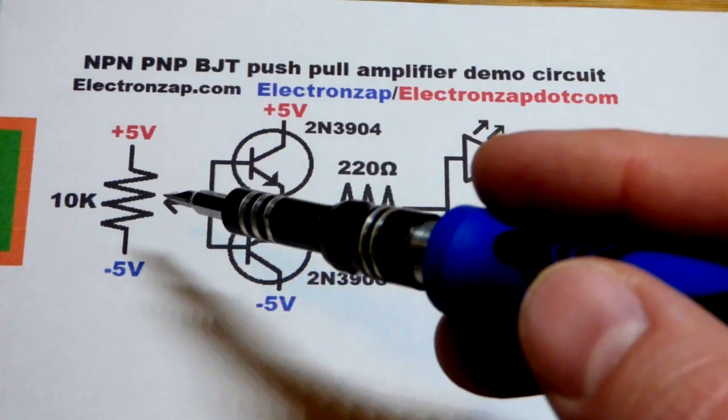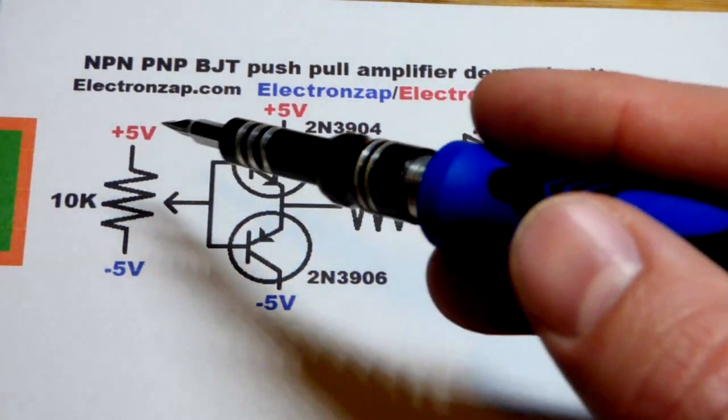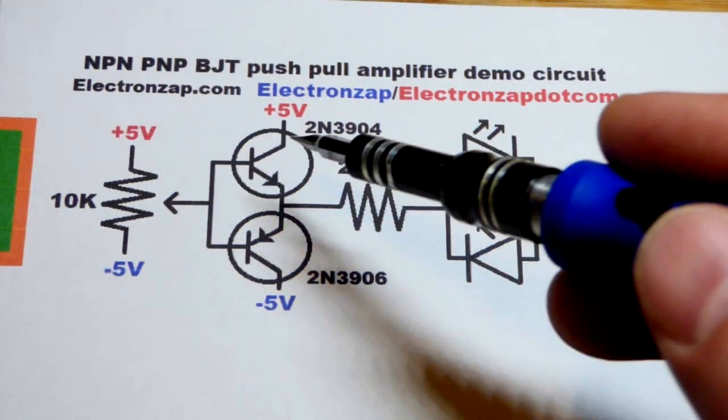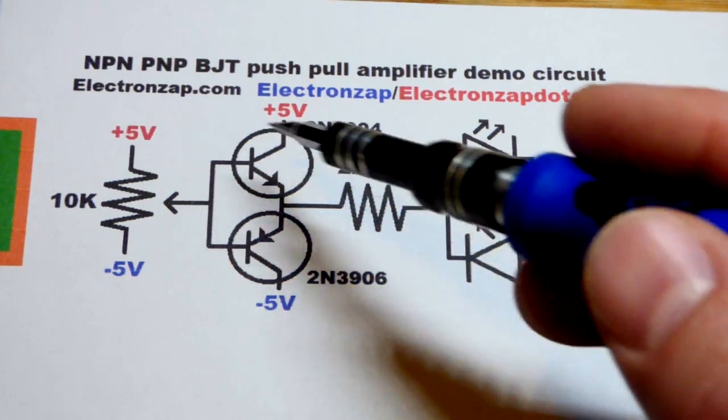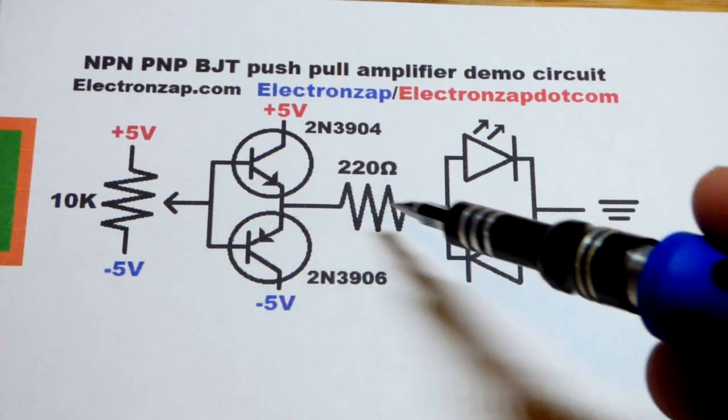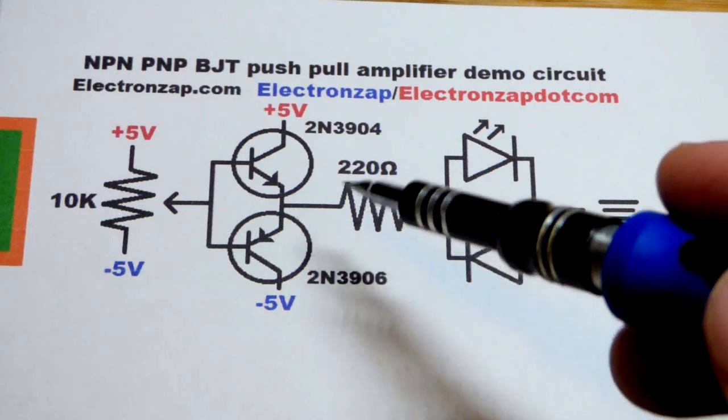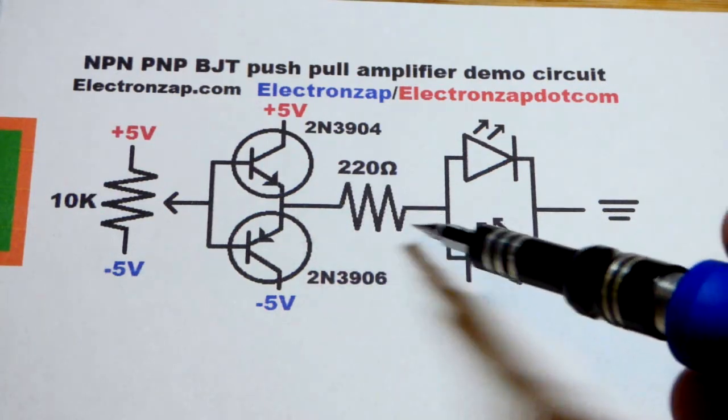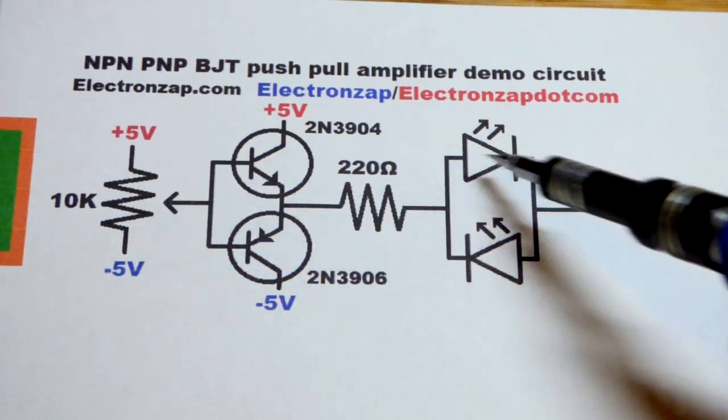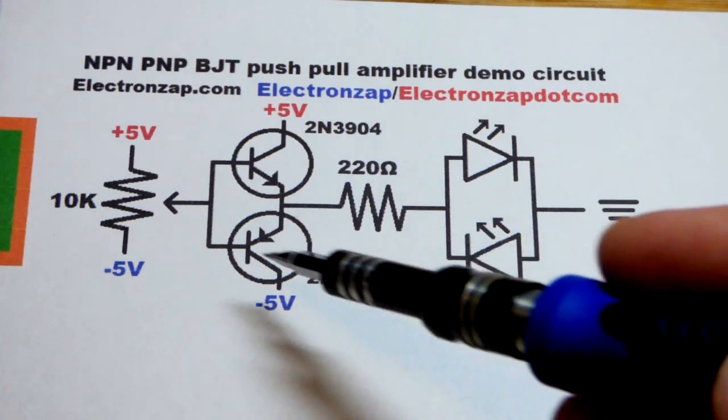When it's more positive by 0.6 volts or more, then that voltage will be transferred through the NPN bipolar junction transistor to the load and the resistor will be limiting the current not the signal source. And that LED will light up.